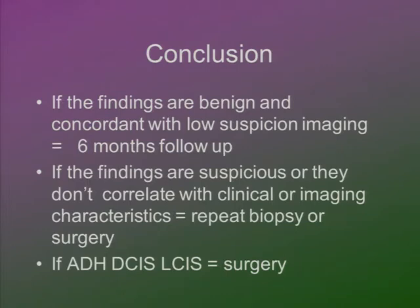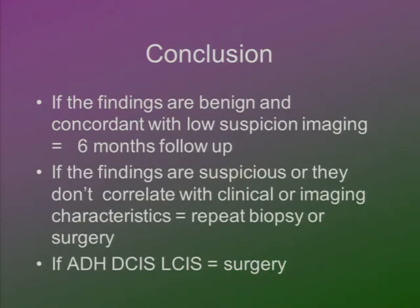When you have microcalcifications, assess their morphology. Irregular shape, grouping, or ductal anatomy distribution means they're suspicious and need stereotactic biopsy. If pathology is benign, a six-month follow-up is sufficient. If findings are suspicious or malignant, proceed to surgery. The underestimation rate is low with vacuum-assisted biopsy, and if atypical ductal hyperplasia, DCIS, or LCIS is found on vacuum biopsy, you proceed to surgery anyway — limiting the underestimation risk.